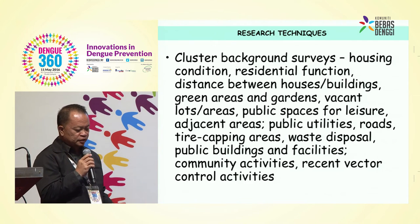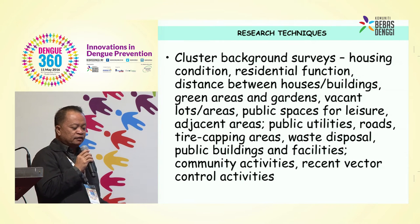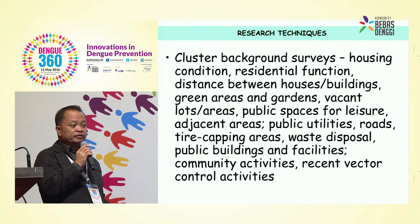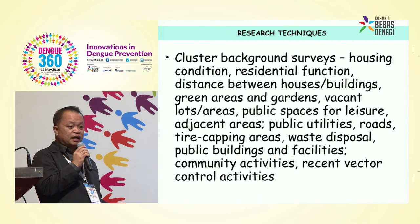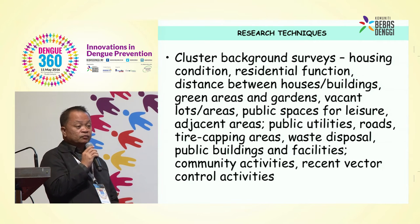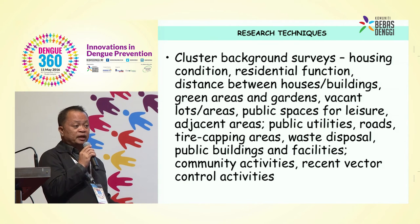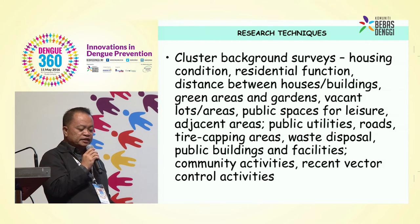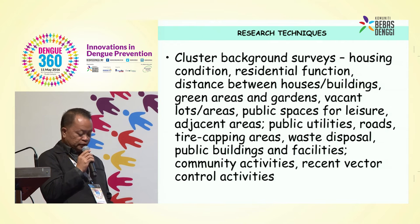For the cluster background surveys, we looked at housing condition and its probable association with transmission. We categorized the function of houses — whether residential — the distance between houses, buildings, and the areas and gardens in each cluster. We looked at vacant lots for possible breeding sites, public spaces for leisure, adjacent areas, roads, tire capping areas, waste disposal, public buildings and facilities, and recent vector control activities.